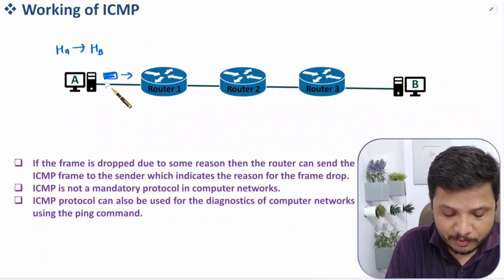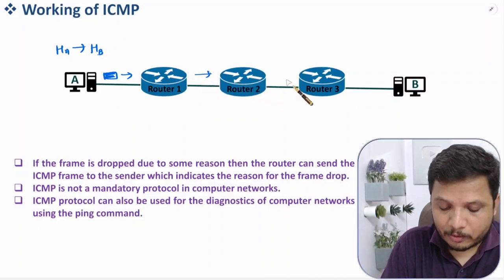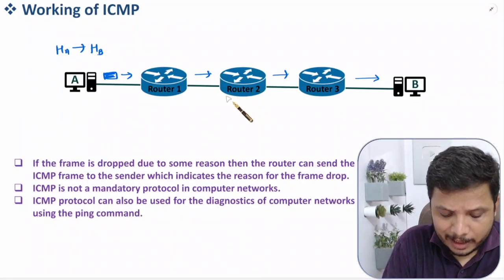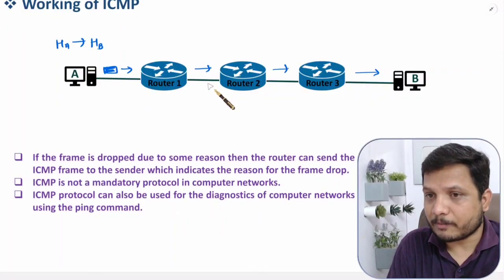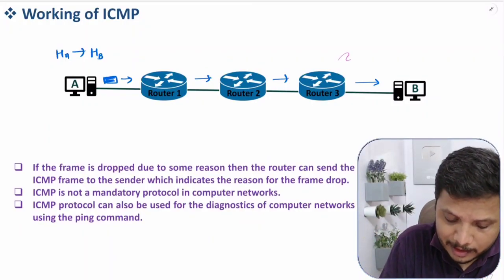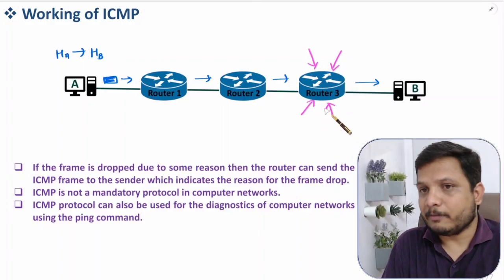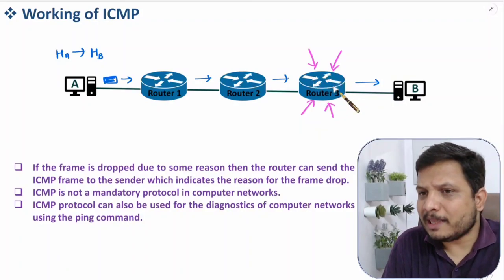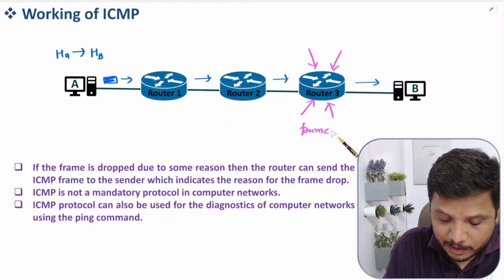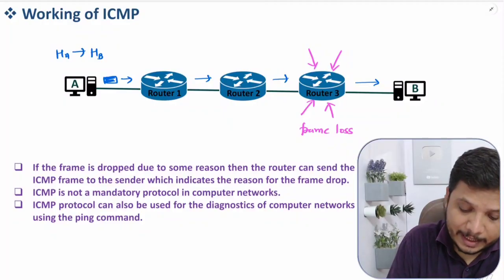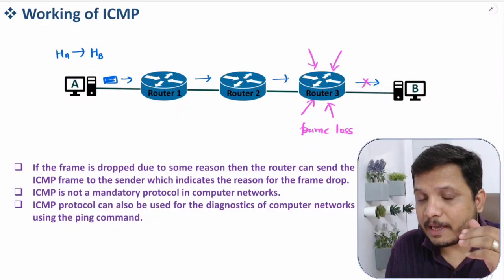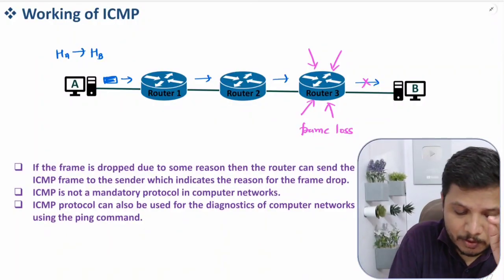The frame from Host A will be routed via Router 1, then Router 2, then Router 3, and should reach Host B. However, it is always possible that the frame may get lost somewhere in the network. For example, Router 3 may be so congested with traffic that there is frame loss there. As per Internet Protocol, Host B will not receive this frame — that is why IP is called an unreliable service.